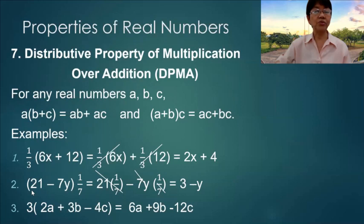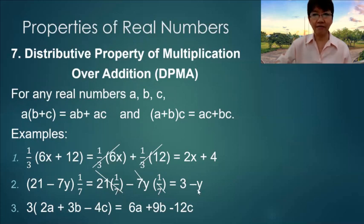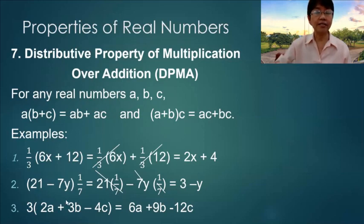Example two: the multiplier 1/7 is distributed inside the parenthesis, so 21 divided by 7 is 3, and 7 divided by 7 leaves negative y, giving the answer 3 minus y. Example three: 3 is multiplied into the quantity inside, so 3 times 2a is 6a, 3 times 3b is 9b, and 3 times negative 4c is negative 12c.